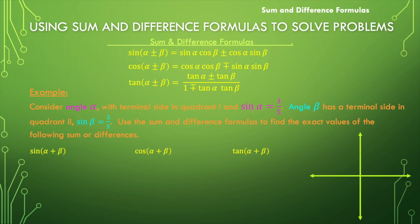We're going to start with this example. Consider angle alpha with terminal side in quadrant one, and the sine of alpha is three-fifths. Also, angle beta has terminal side in quadrant two, and sine of beta is equal to three-fifths.